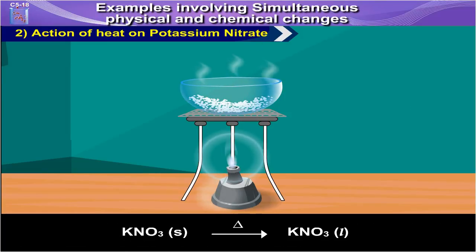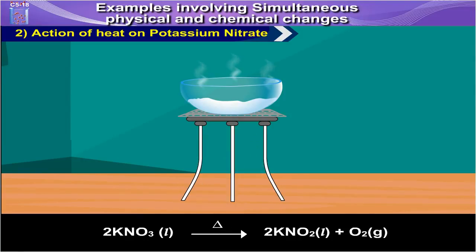KNO3 solid upon heating gives KNO3 liquid and this is a physical change. 2KNO3 liquid upon heating gives 2KNO2 liquid plus O2 gas.